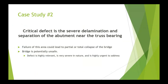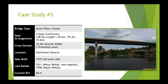The critical defect is the severe delamination and separation of the abutment at that bearing. If this part of the abutment, which supports one of only two truss members, were to fail, that's going to affect the stability of the bridge pretty significantly and could lead to partial or total collapse. The defect is highly relevant to the safety of the bridge, very severe in nature, and should be addressed urgently — high urgency.